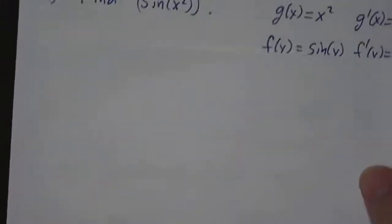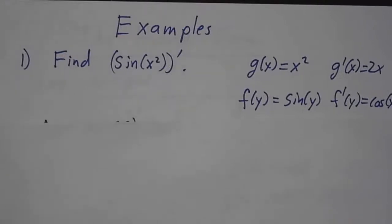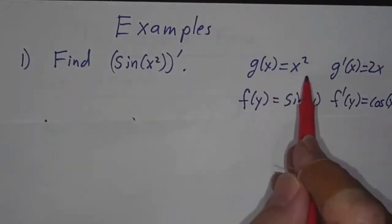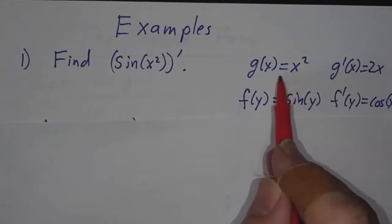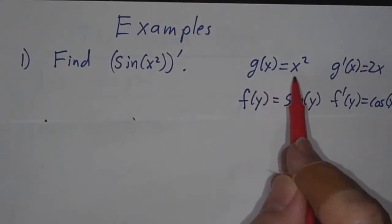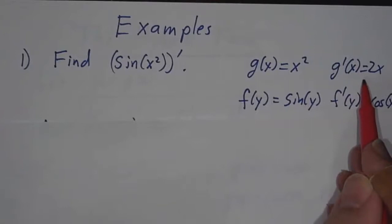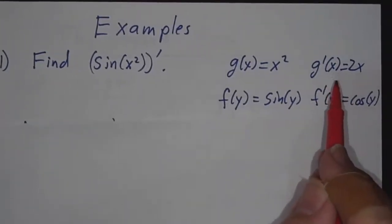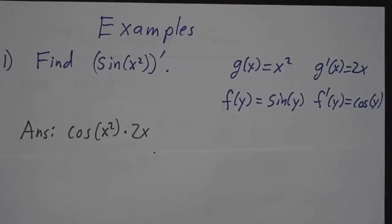So let's use it to compute some derivatives. If we want the derivative of sine of x squared, the inner function is g of x = x squared, because that's what you do first — you first square it, and then you take the sine. So g of x is x squared, g prime of x is 2x. f of y is sine of y, f prime of y is cosine of y. So our answer is going to be cosine of y times 2x.